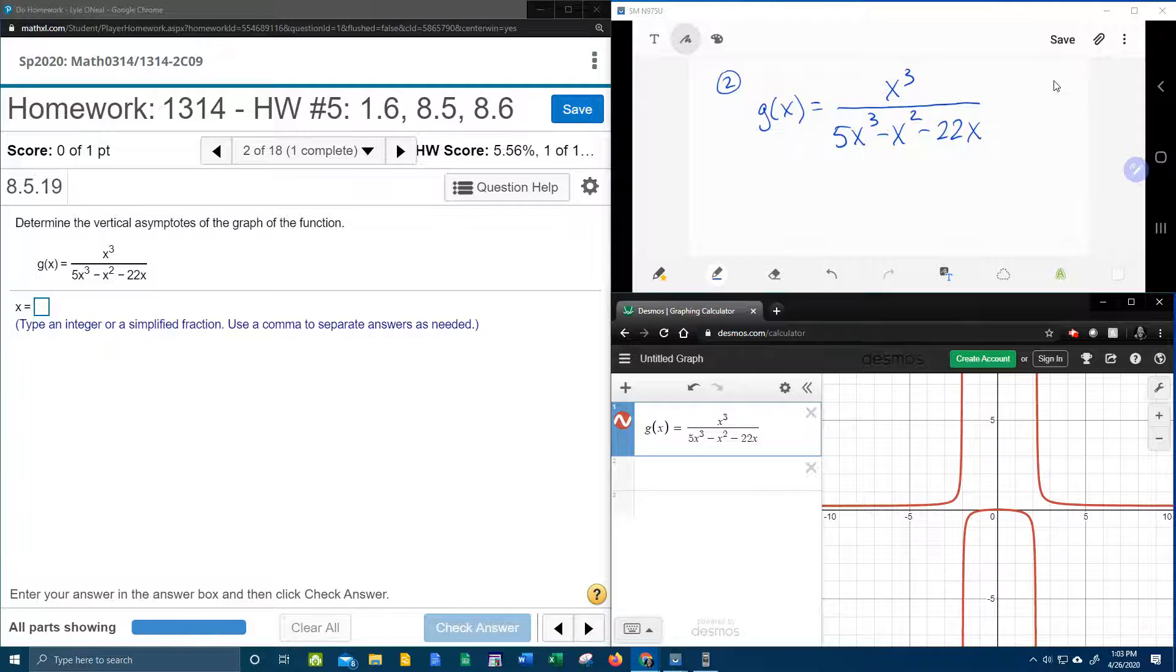However, to find specifically vertical asymptotes, if your rational function will reduce, you need to reduce it first.